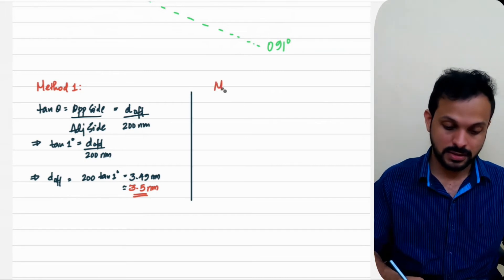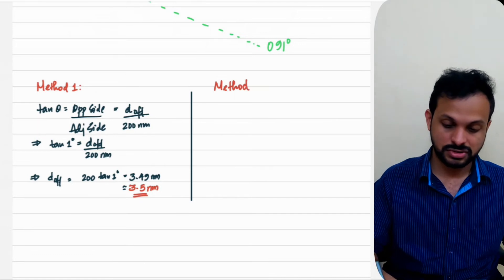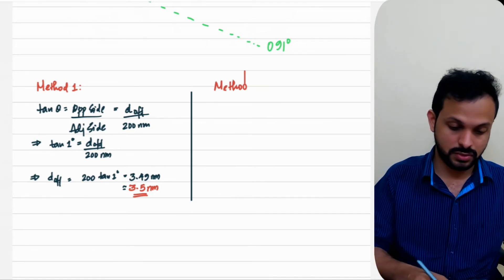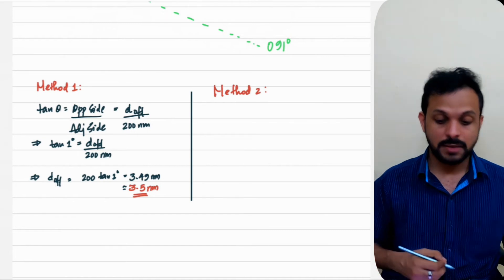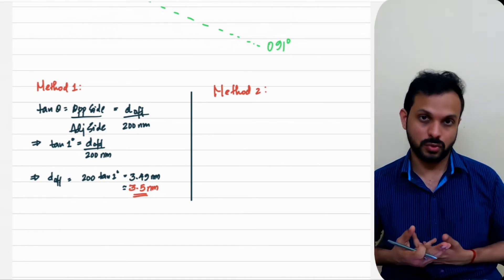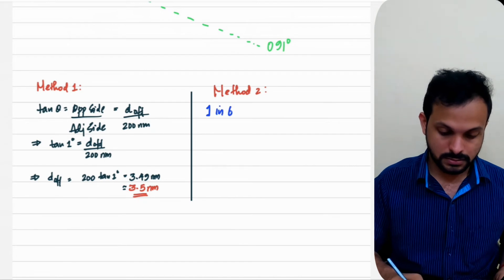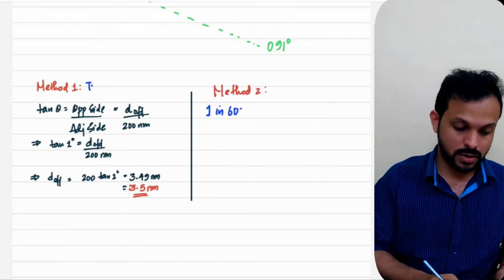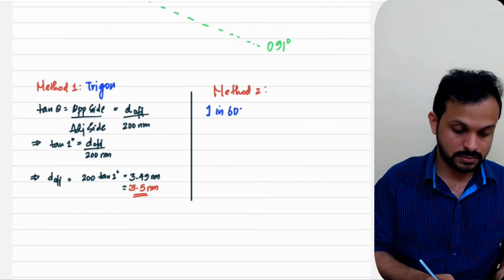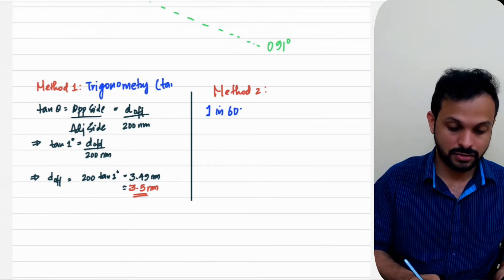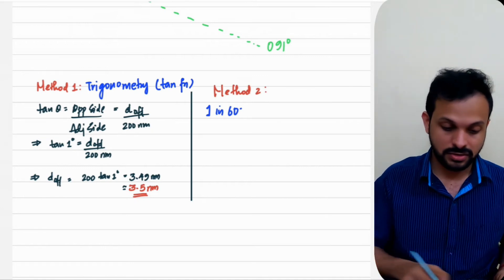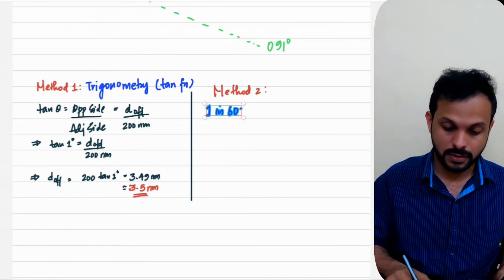Now let me show you the very popular Method 2, which uses the 1-in-60 rule. So Method 1 uses trigonometry with the tan function, and Method 2 uses 1-in-60.